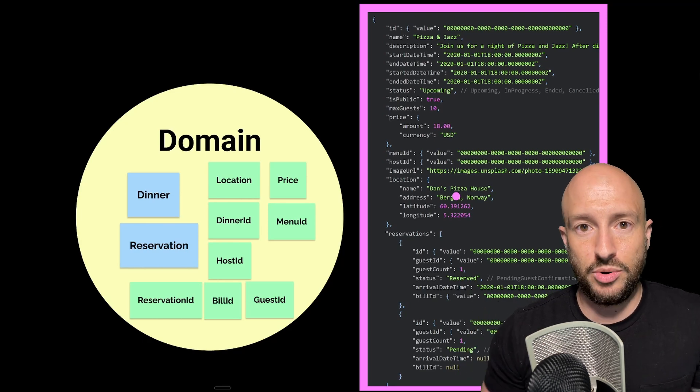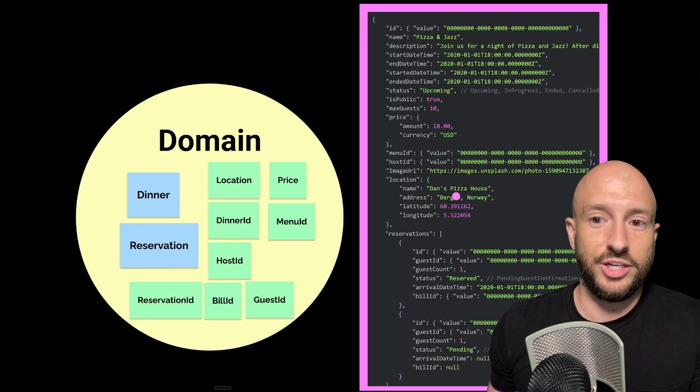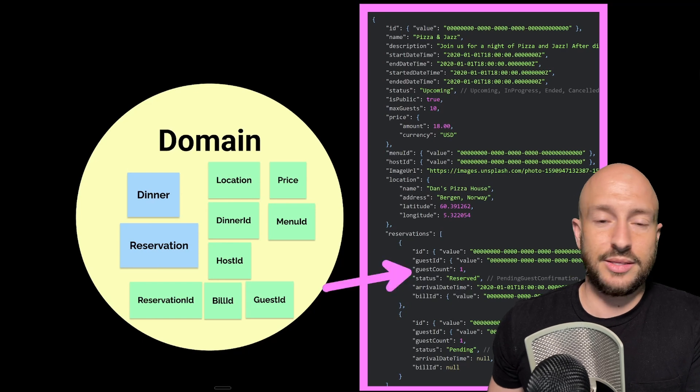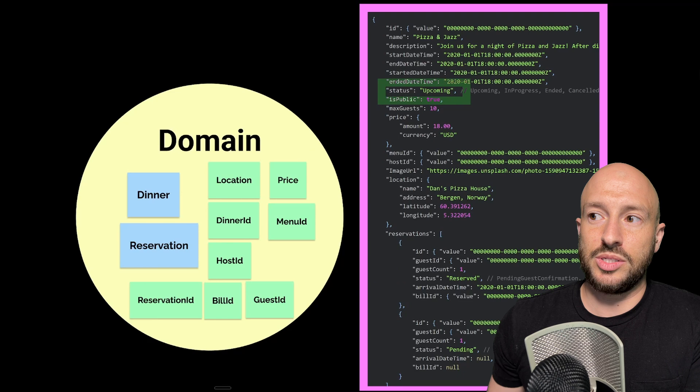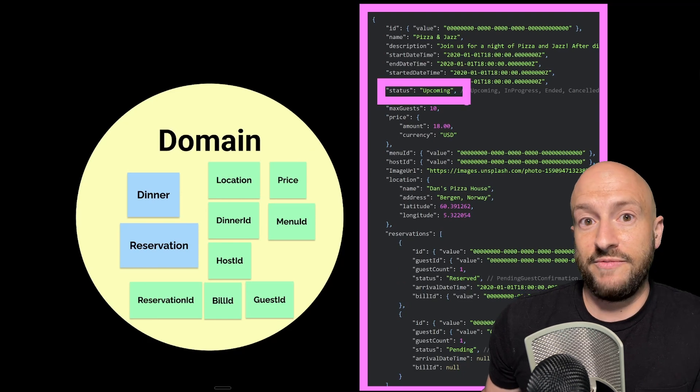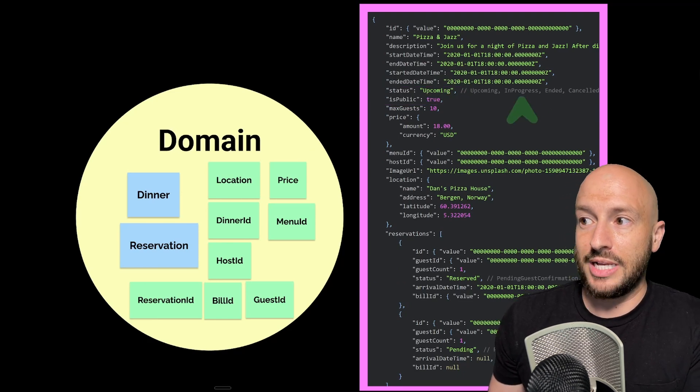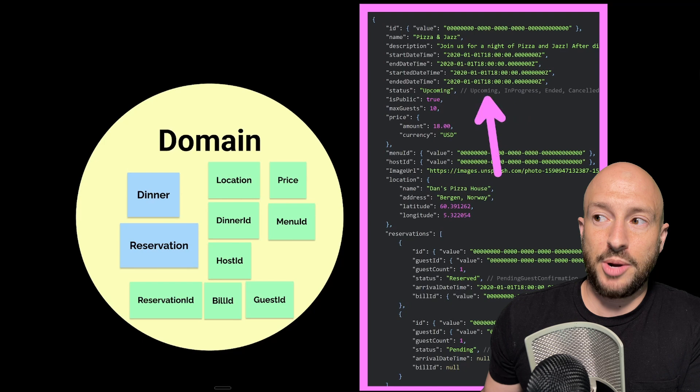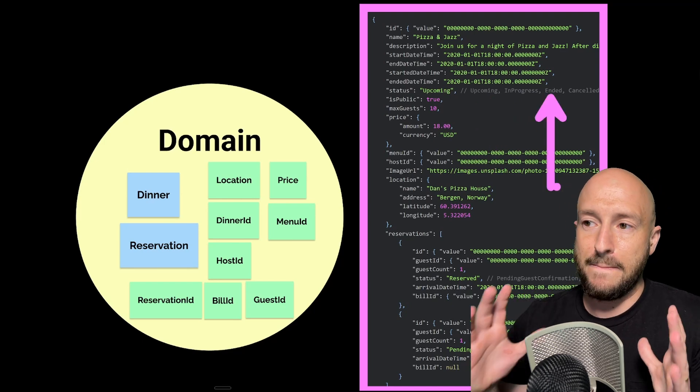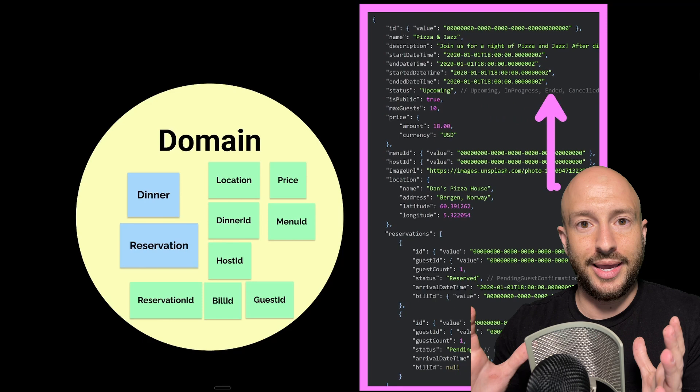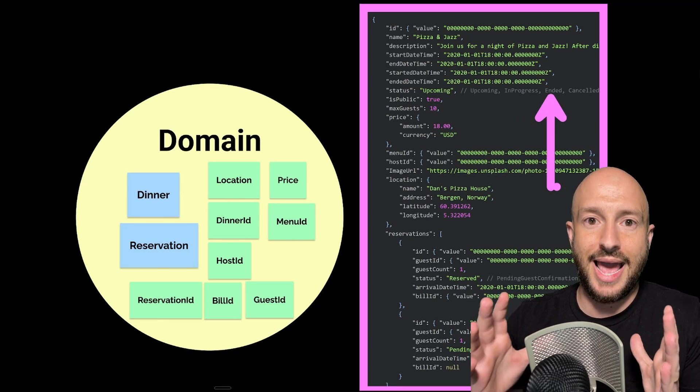Looking at this example, when a new reservation is made, then it's making sure that the total guest counts isn't more than the maximum guests, or that the status is always one of the valid statuses. So you can't move, for example, from in progress to upcoming, you can only move to ended, and so on. So it's basically making sure that this entire thing is consistent and valid as a whole.